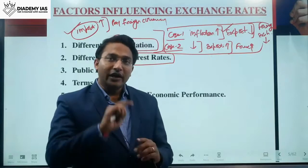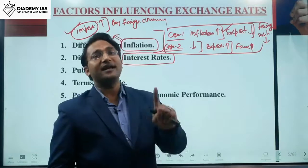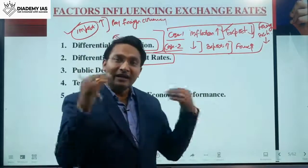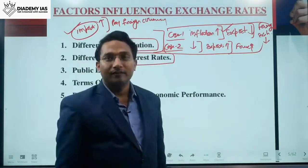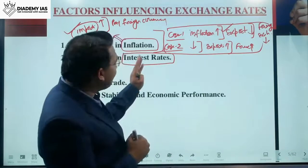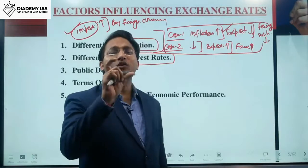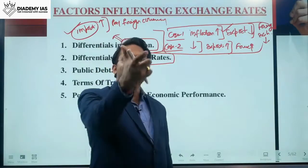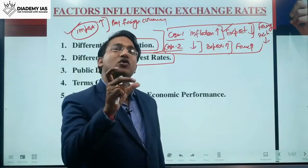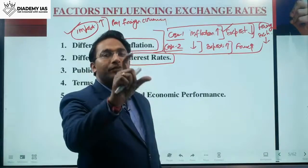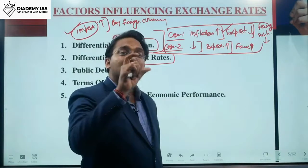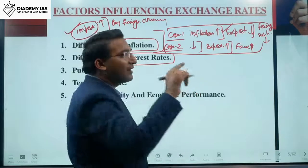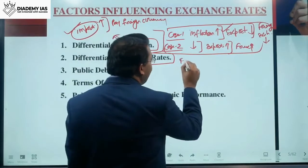Any investor in the world would like to invest in a country like India because the interest rate is high. In the USA the rate is low, but risk is virtually zero due to strong financial stability. In India the rate is high, but risk is also high. Now suppose the USA increases its interest rate from 2% to 4% while India keeps its rate unchanged.